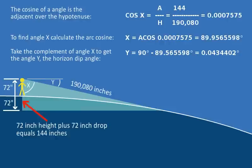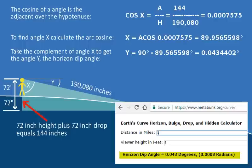From this information, we can calculate the horizon dip angle using simple trigonometry. I've shown the calculation on the screen in case you want to check it, but you can also calculate it at metabunk.org/curve just by plugging in the height and distance. The answer comes out to 0.043 degrees. That's right — it's only 4% of 1 degree. That is a very tiny angle.